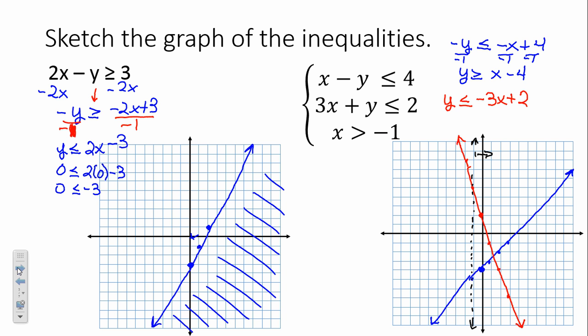Where is y going to be bigger than or equal to x minus 4? Above the blue line — we're shading in that direction for the blue line. And the last one: where is y smaller than or equal to negative 3x plus 2, the red line? Below. So which portion of the graph is contained by all three lines? That little triangle — that's the part we're shading.